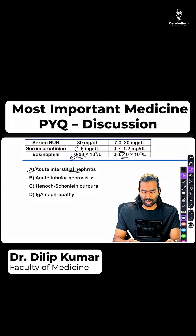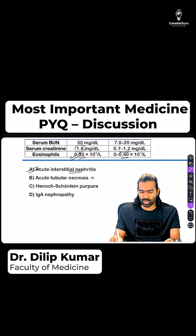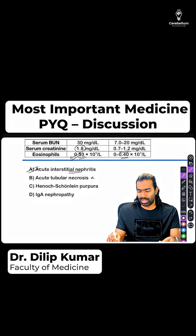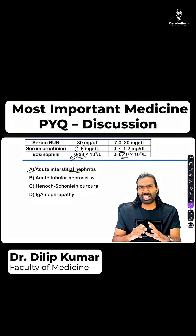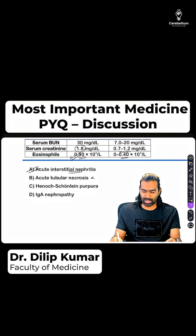Acute tubular necrosis of course would have had a muddy brown cast in the urine, and the patient will be mostly oliguric. AIN patients generally will be non-oliguric, but ATN patients will be generally oliguric. So in the context of what's happening here, AIN is more likely than ATN.